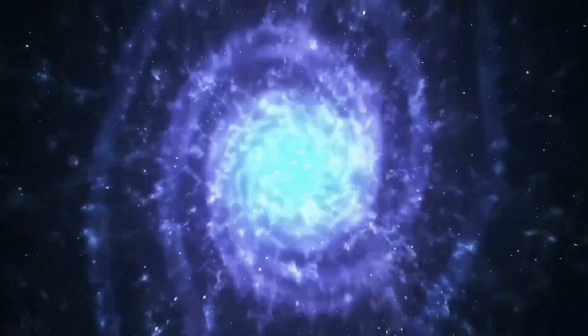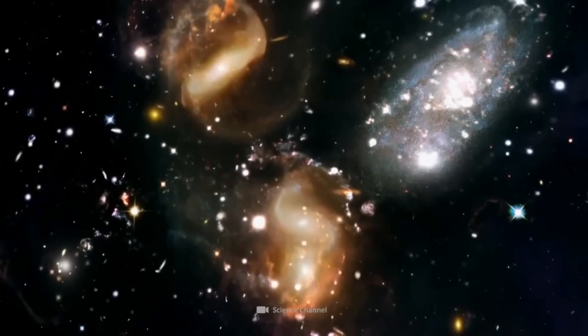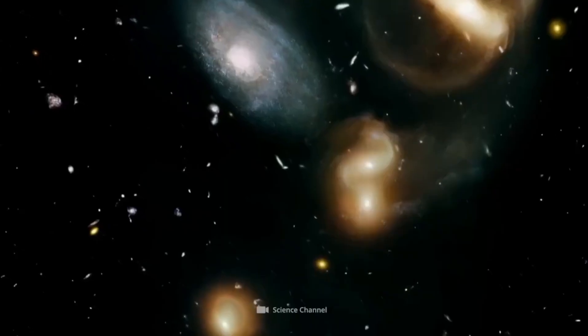In 1916, Albert Einstein published his theory of general relativity, which predicted the existence of black holes. At that time, the concept of black holes was purely theoretical. It took another 50 years for the scientific community to find evidence that black holes actually exist.